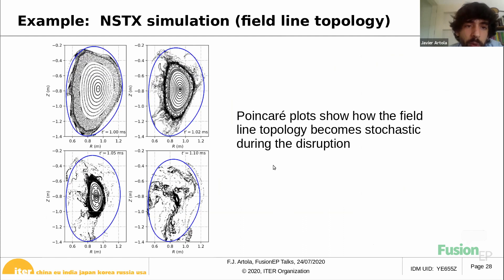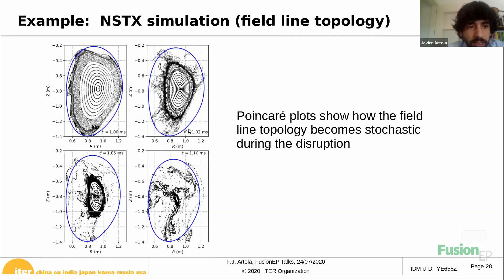These simulations can also be used to analyze the topology of the magnetic field during disruptions using Poincaré plots. They show that at the beginning of the disruption, we have a large fraction of closed flux surfaces, with some stochasticity already appearing at the edge. As time passes, this stochasticity gets inside the plasma and eventually no closed flux surfaces remain. Then you lose all your heat through the open magnetic field lines. The empty regions in the plots are empty because there the field lines go directly to the wall.